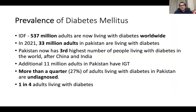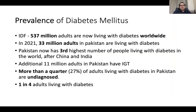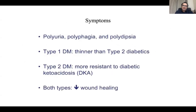Diabetes is very prevalent in Pakistan and worldwide — 537 million are now living with diabetes globally. In Pakistan, 33 million diabetics are there, making Pakistan the third highest in number of people living with diabetes. An additional 11 million adults in Pakistan have pre-diabetes, and around 27% do not even know they have diabetes — they are undiagnosed. In Pakistan, we say that one in four are diabetics.